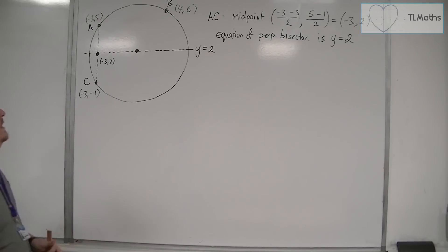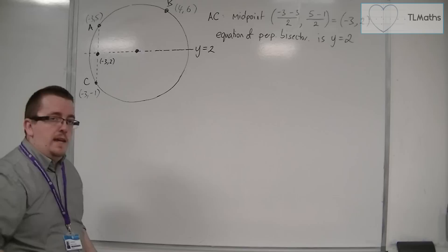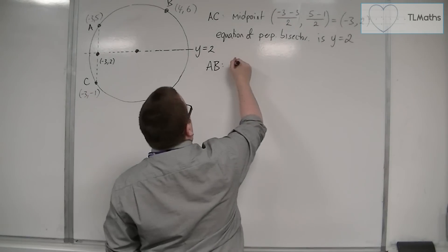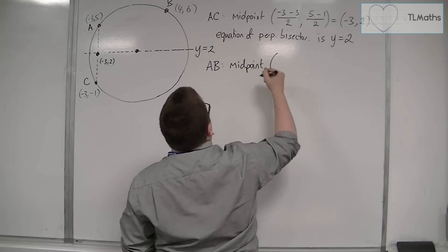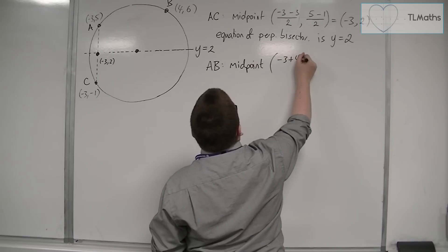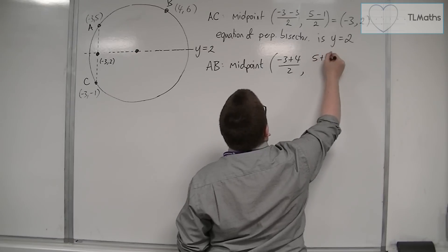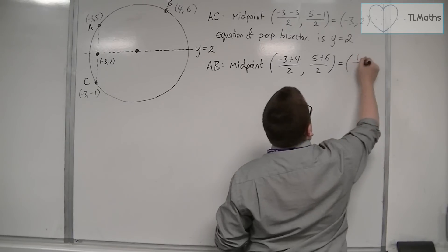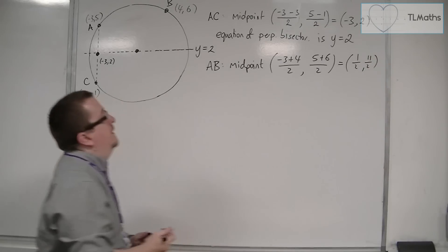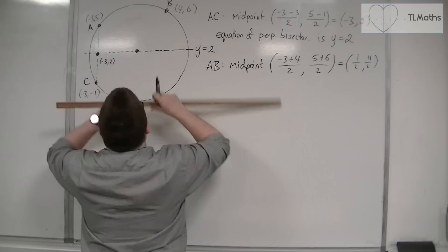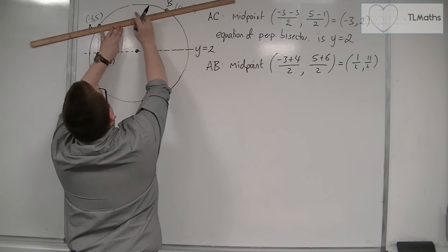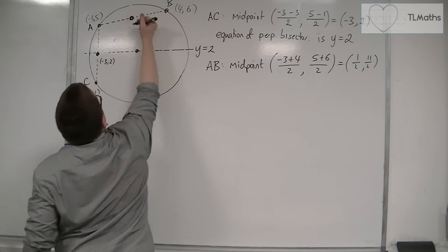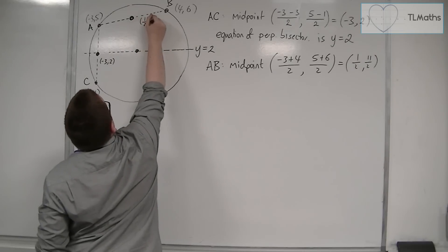We now want to find the perpendicular bisector of A and B. The first thing to do is find the midpoint of A and B. We find the average of the x-coordinates: minus three plus four divided by two, and the average of the y-coordinates: five plus six over two. That gives us one half and eleven halves as the coordinates of the midpoint of A and B.